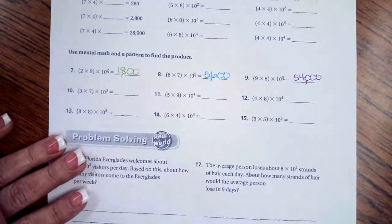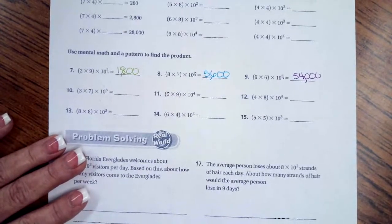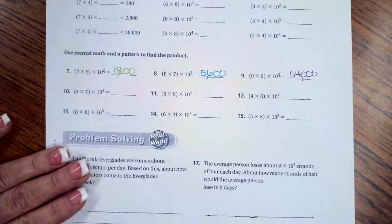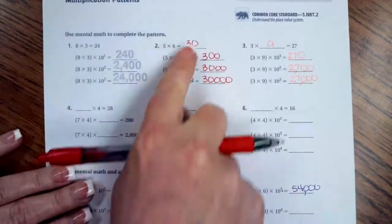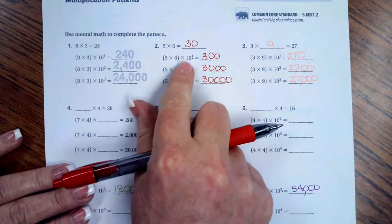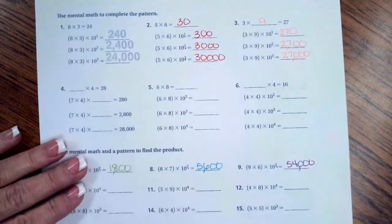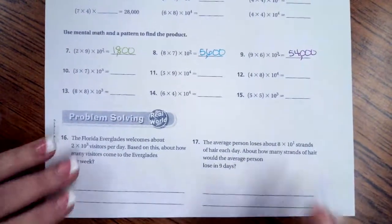You guys go ahead and do through number 15. Don't get confused if you wind up having like 5 times 6 where the answer is 30. Kind of like up here where the answer is 30, but we still have to add a 0 to the end for that exponent. Don't confuse the 0 in 30 for the 0 in the final answer.